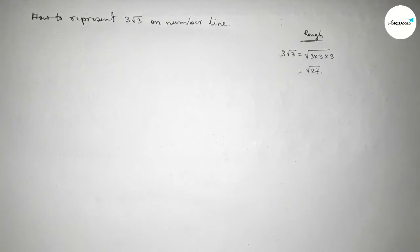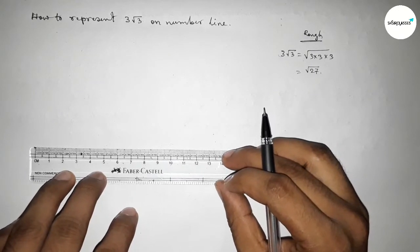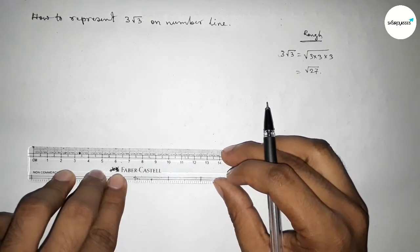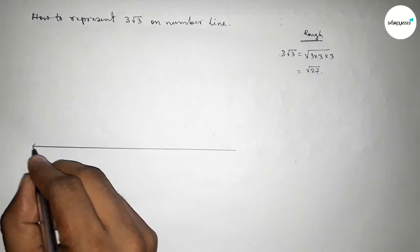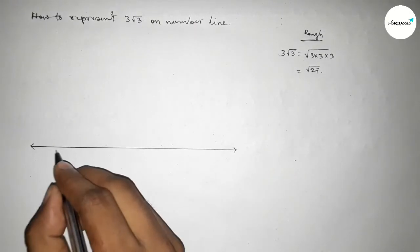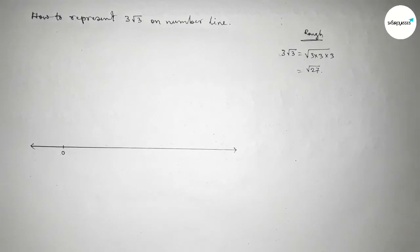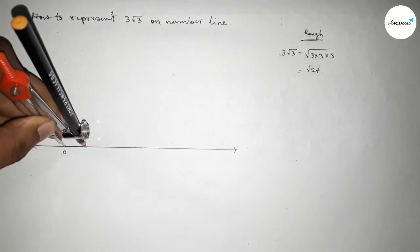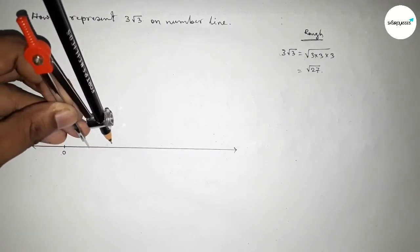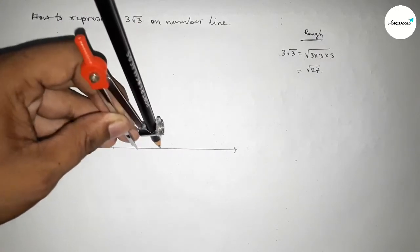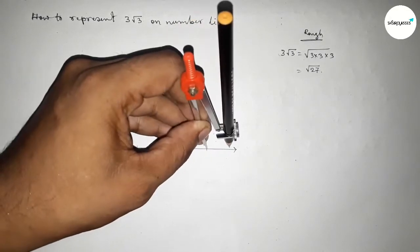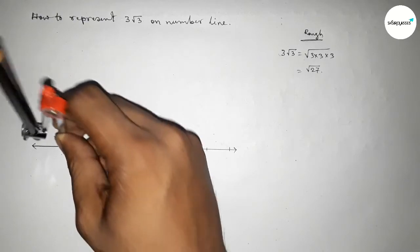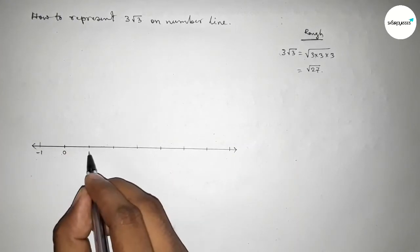First, we draw a number line — a line of any length with arrow marks on both sides. Taking zero as the starting point, we use a compass to mark equal unit lengths on the line. Using the scale to mark numbers: minus one, one, two, three, four, five, six, seven.